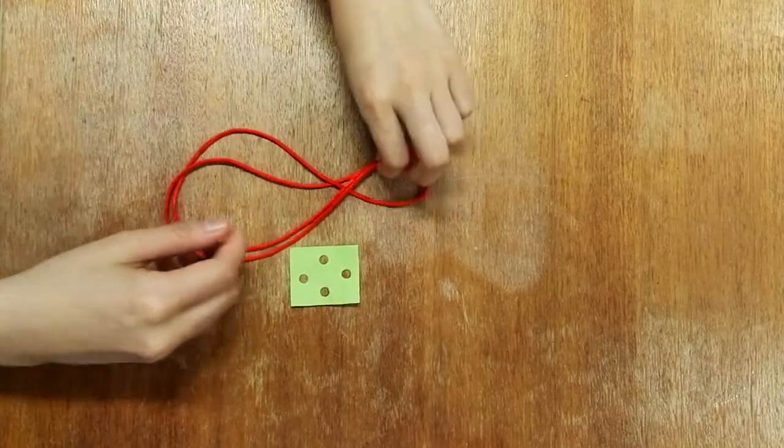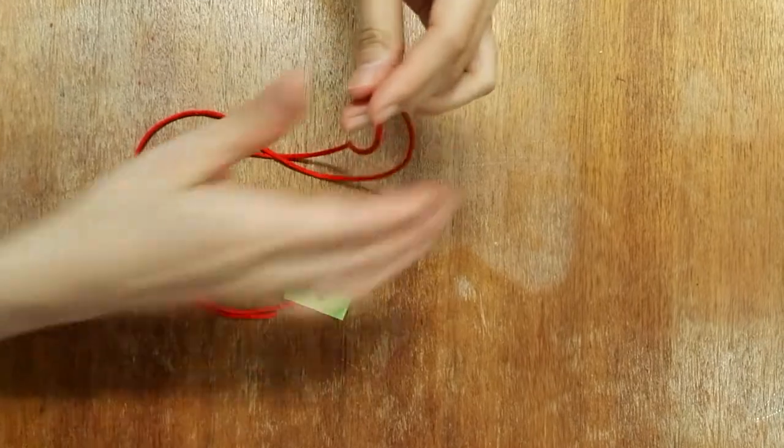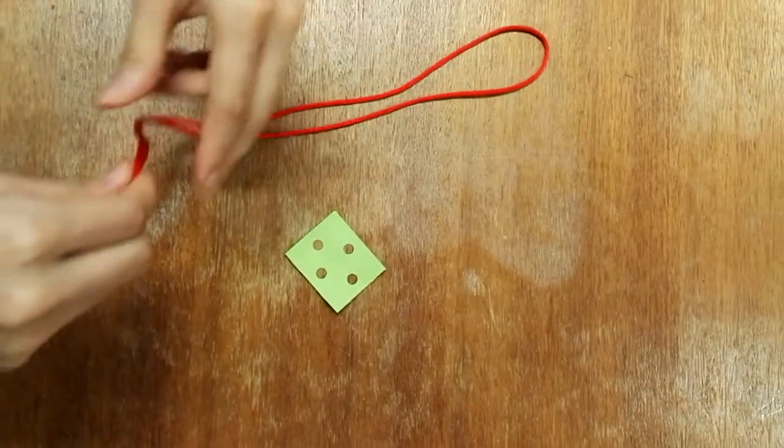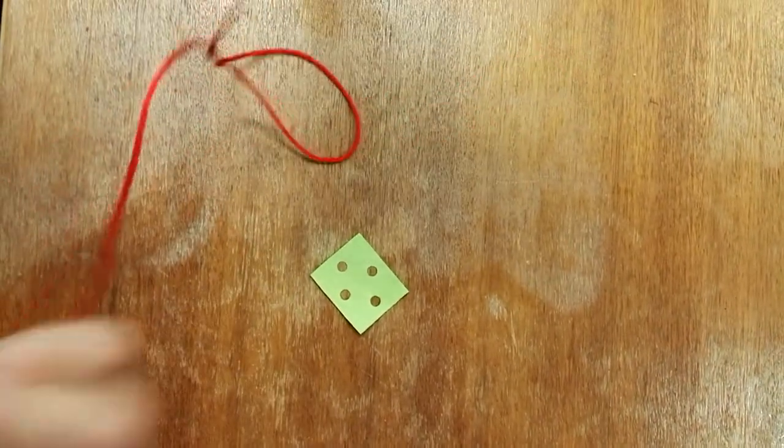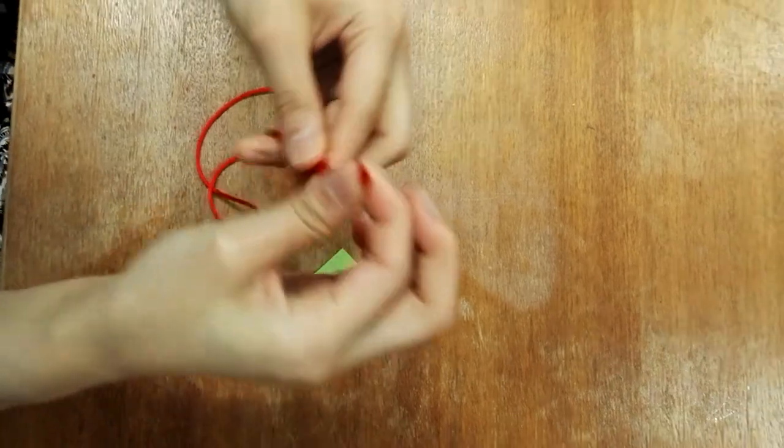First, we should insert the cord into the paper template. Fold your cord in half, making the two loose ends meet.